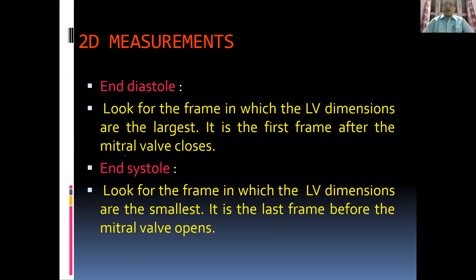Importantly, both diastole and systole are measured when the mitral valve is closed. With the mitral valve closed, the biggest dimension is the diastolic diameter and the smallest dimension is the systolic diameter. Do not take the diastolic dimension with the mitral valve fully open — that is not according to the American Society guidelines.